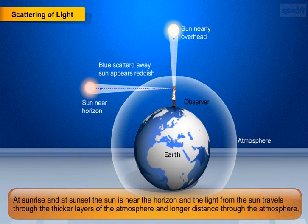At sunrise and at sunset, the sun is near the horizon and the light from the sun travels through the thicker layers of the atmosphere and longer distance through the atmosphere. Near the horizon, most of the blue light and shorter wavelengths are scattered away by the particles of the air, and the red light and longer wavelengths reaches our eyes. So the sun appears reddish at sunrise and sunset.